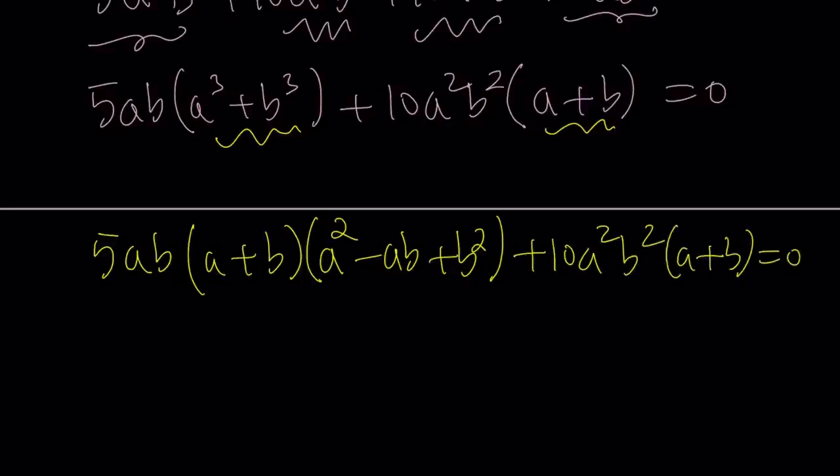We can factor it into a plus b times a squared minus ab plus b squared. And the second piece just stays the same. Now we have a lot of common factors. First of all, a plus b. But not only that, because we have 5ab and 10a squared b squared. And obviously 10a squared b squared can be written as 5ab times 2ab. Therefore, it contains 5ab as a common factor. The common factor is 5ab times a plus b.